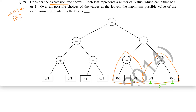Now here we also have to maximize, but the operator here is minus. So in order to maximize, we have to maximize the left part and minimize the right part. Then only, after subtraction, will the overall value of this subtree be maximum. The maximum value of the left leaf is 1, and the minimum value of the right leaf is 0. So 1 minus 0 gives us 1 — the maximum value for this subtree is 1.